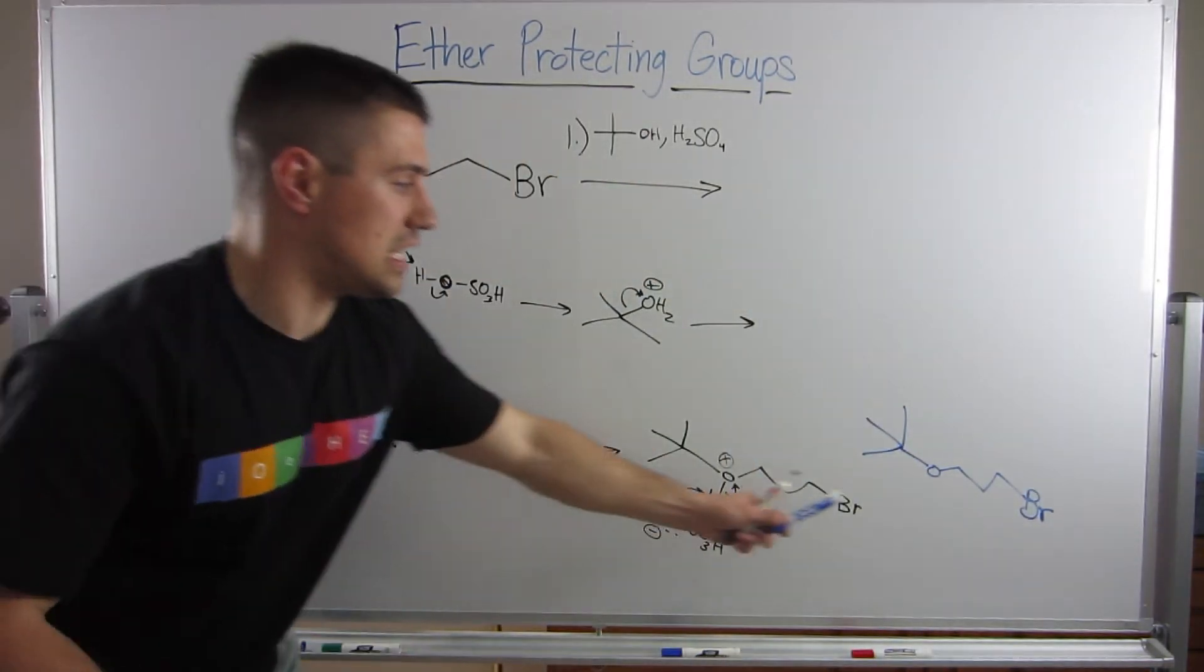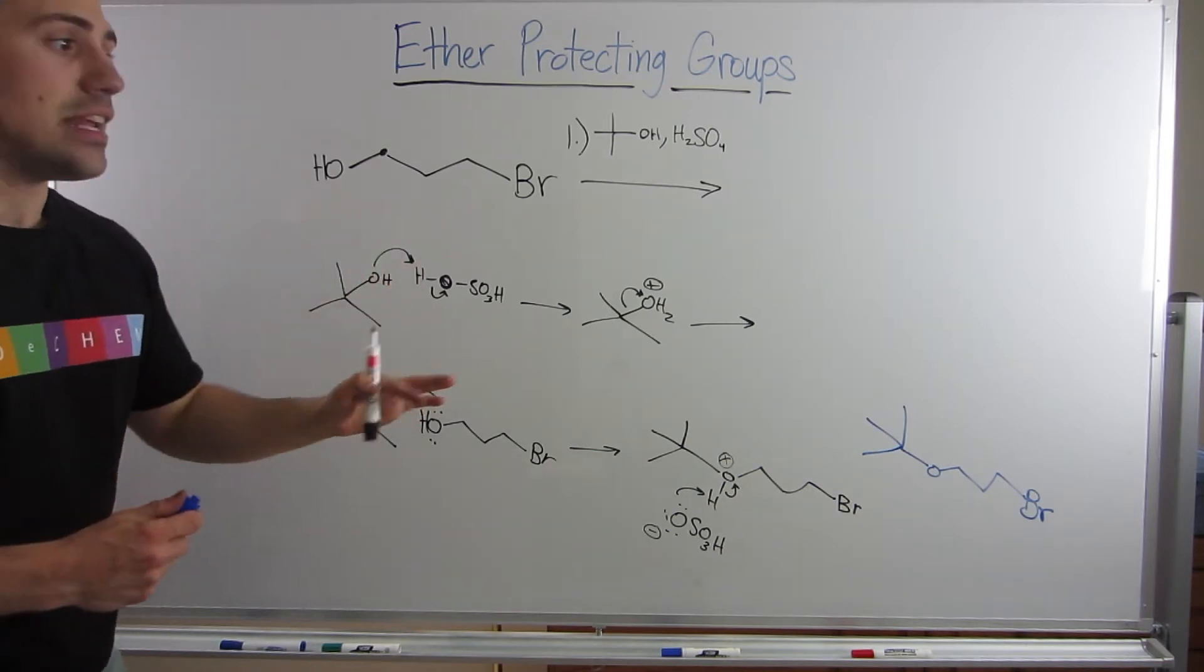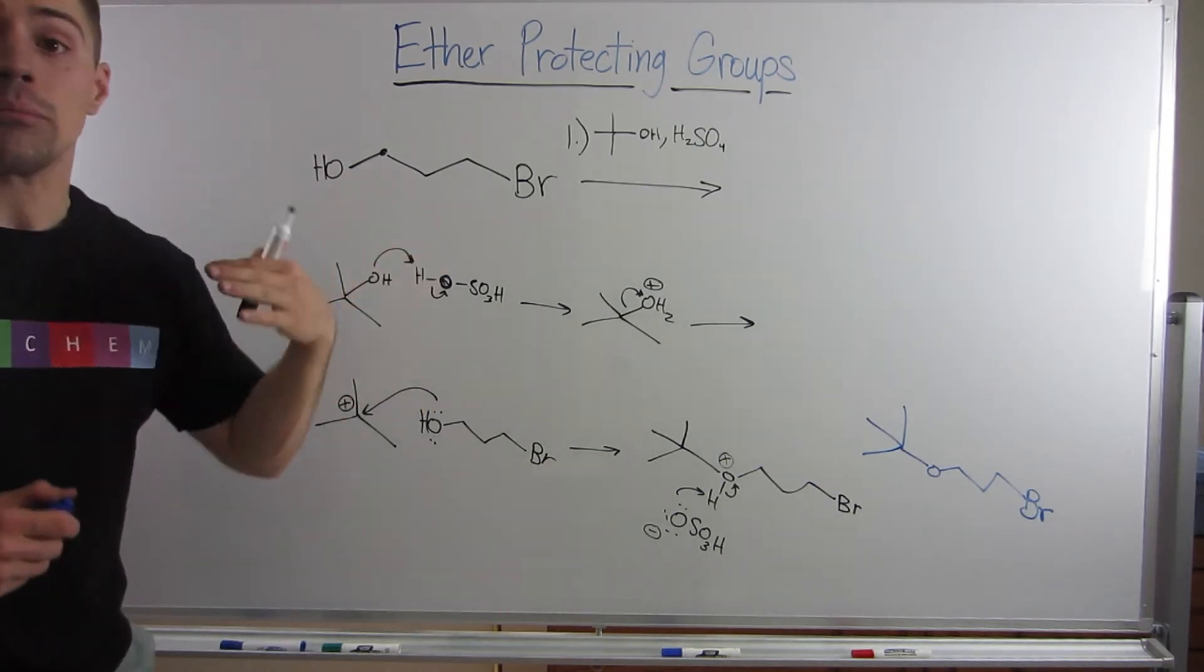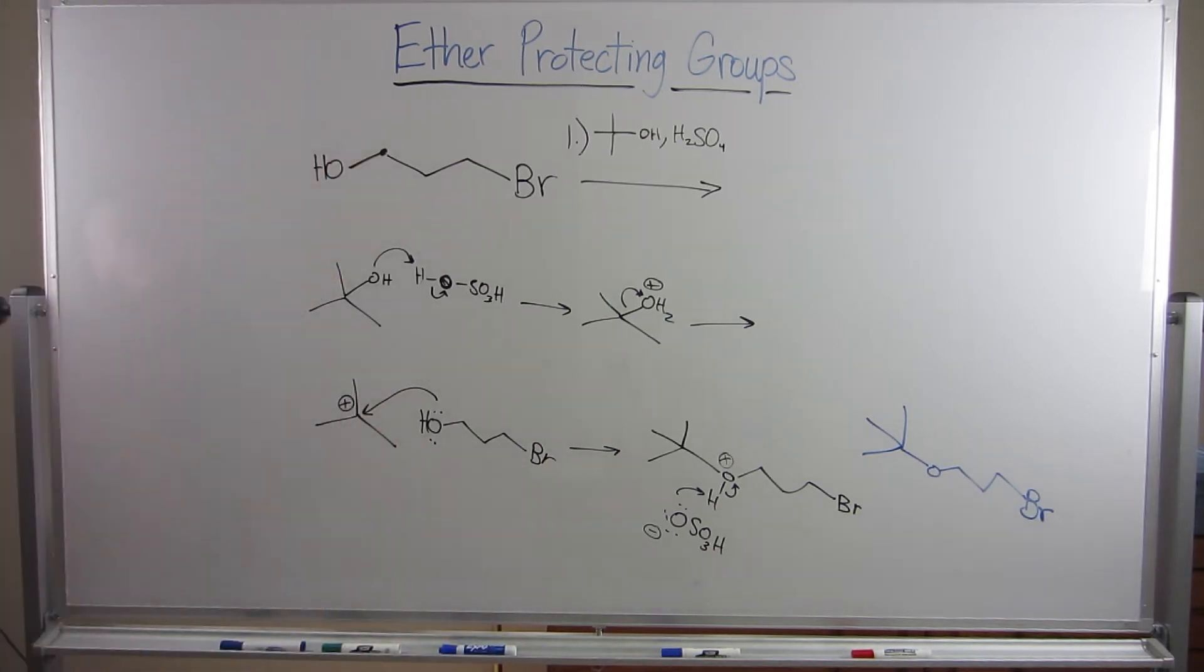The point being, now what we've generated is this compound right here. So you can see how it's an ether, right? Oxygen, carbon chain on both sides. This is protected. Now we've removed the protic character that ruined our Grignard before.